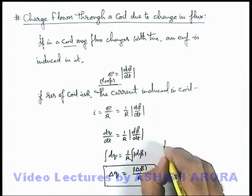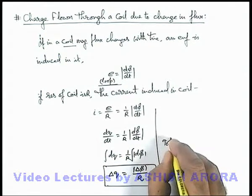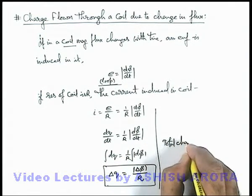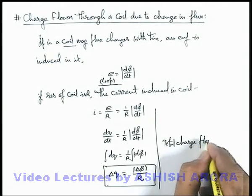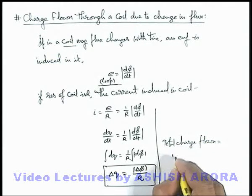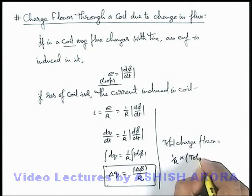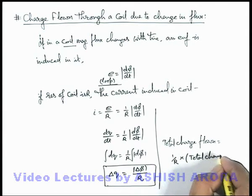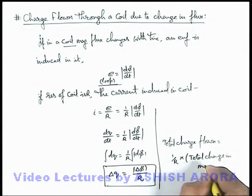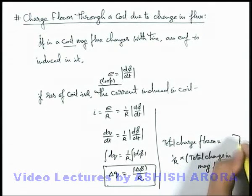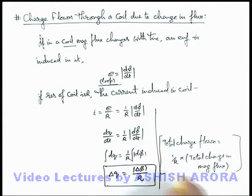You should always keep in mind that total charge flown can be written as 1/R multiplied by the total change in magnetic flux. This is the expression using which you can find out the total charge flowing through any coil or circuit through which the magnetic flux is changing, and this is a very useful relation and basis for many problems.